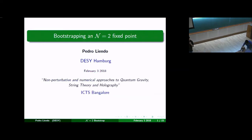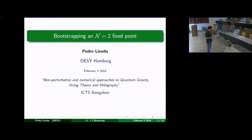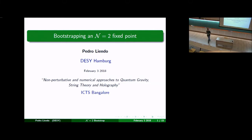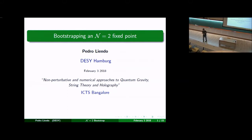Thank you to the organizers for giving me the opportunity to speak twice in this wonderful conference. If I ask the audience which one is the simplest interacting quantum field theory in four dimensions, you are probably going to answer N equals four super Yang-Mills. And you are probably right. However, in this talk, I want to introduce you to a new model that most of you have probably never heard of, but it has a lot of interesting features. One can argue that it is also among the simplest interacting quantum field theories that you can consider.